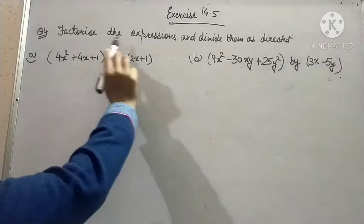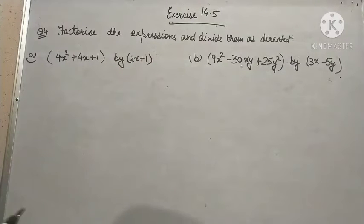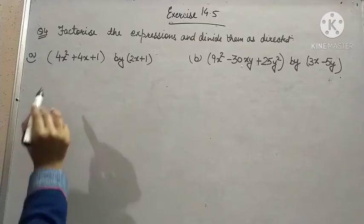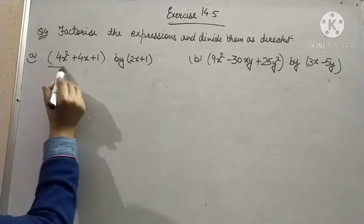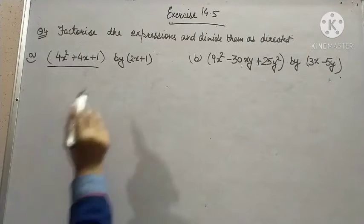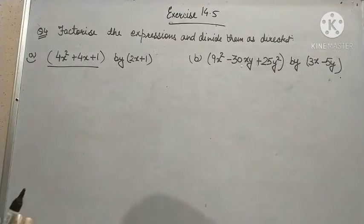Number 4, it is given factorize the expression and divide them as directed. That means first of all we need to factorize this trinomial and after that we need to do division.